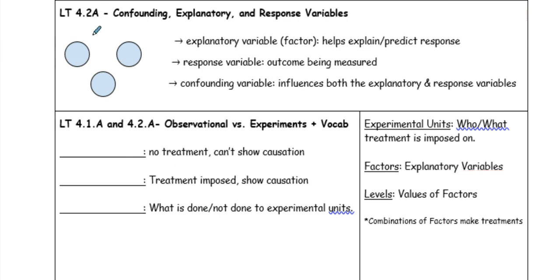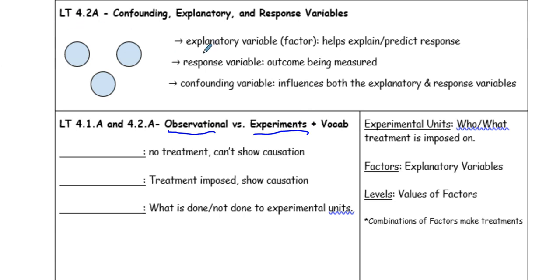Welcome back. We're going to talk about 4.2a, and specifically we'll be looking at confounding, explanatory, and response variables, and observational studies versus experiments. Here are some notes that you probably want to jot down.